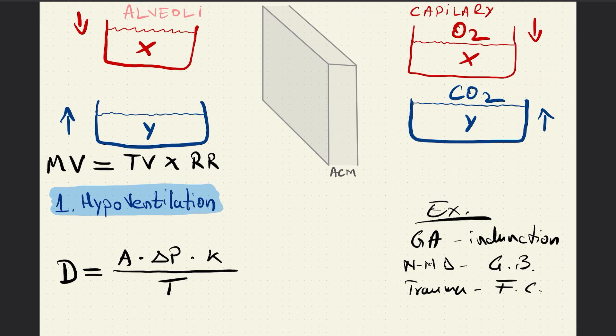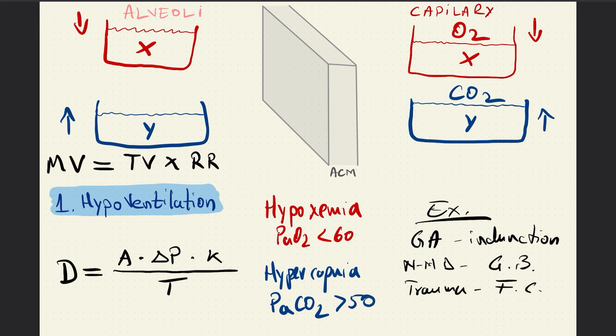After a couple of minutes, if we perform an ABG, we will be left with hypoxemia, which is partial pressure of oxygen below 60, and with hypercapnia, which is defined by a partial arterial pressure of carbon dioxide above 50. So in essence, this would be a hypoxemia and hypercapnic state.